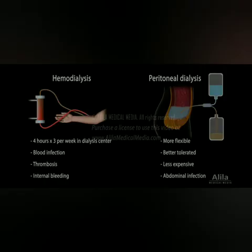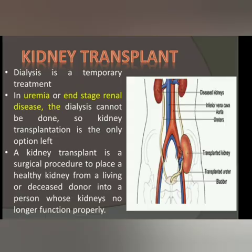Hemodialysis uses the peritoneum membrane and is done for 4 hours, 3 times per week at a dialysis center. It carries more risk of blood infection and internal bleeding. In comparison, peritoneal dialysis is more flexible — the patient can continue working while the process is ongoing, even during sleep. It is better tolerated, less painful, less expensive compared to hemodialysis, but the chances of abdominal infection are higher. Dialysis is basically a temporary treatment.